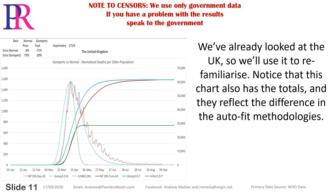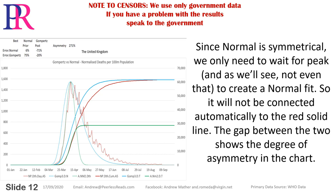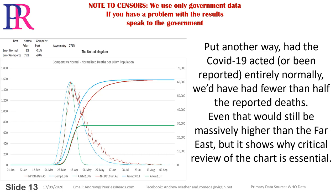We've already looked at the UK so we'll use it to re-familiarise. Notice that this chart also has the totals, and they reflect the difference in the autofit methodologies. Since normal is symmetrical we only need to wait for peak — and as we'll see, not even that — to create a normal fit. The gap between the two shows the degree of asymmetry in the chart. Put another way, had COVID-19 acted or been reported entirely normally, we would have had fewer than half the reported deaths.